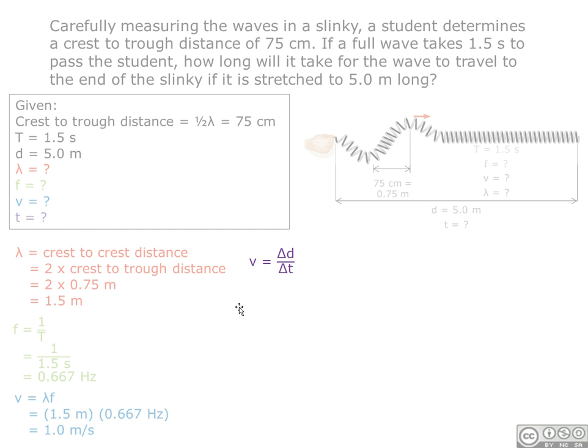Finally, we find the time it takes for the wave to reach the other side by using the equation speed equals change in distance divided by time. To isolate the variable delta t, we need to multiply the entire equation by delta t and then divide it by v. We get the equation change in time equals change in distance divided by speed.